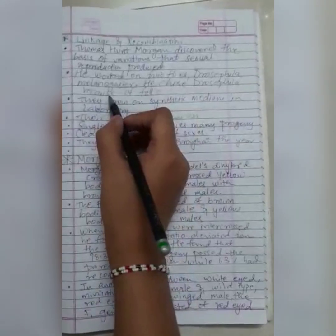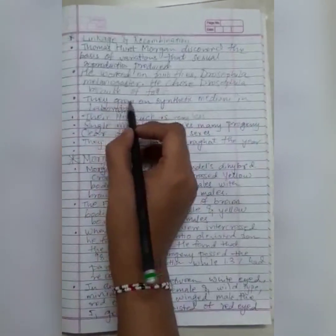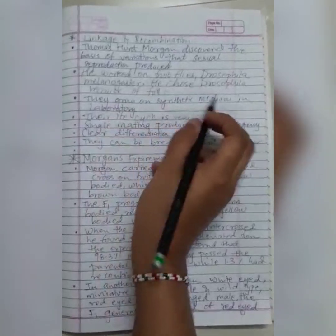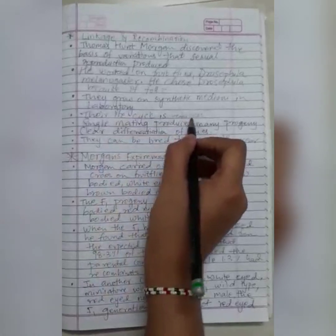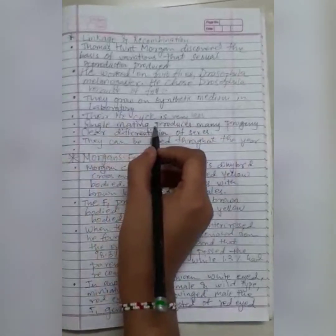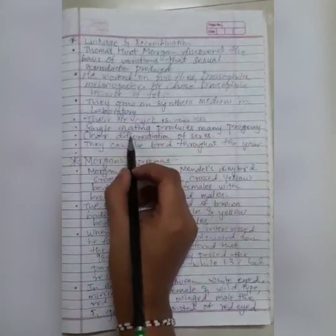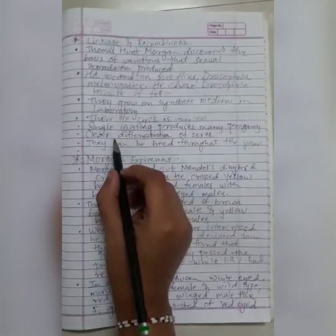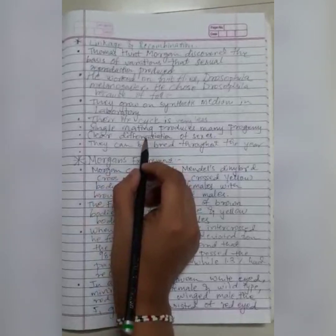He chose Drosophila because of the following: The fruit flies grow on synthetic medium in laboratory. Their life cycle is very short. Single mating produces many progeny. We can clearly differentiate between male and female fruit flies. They can be bred throughout the year.